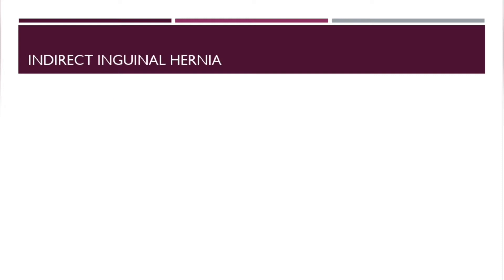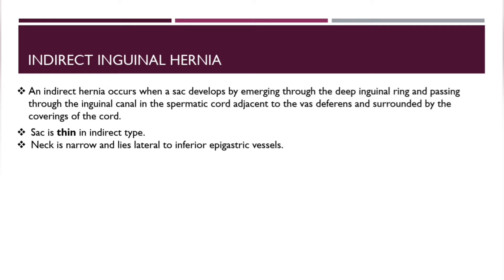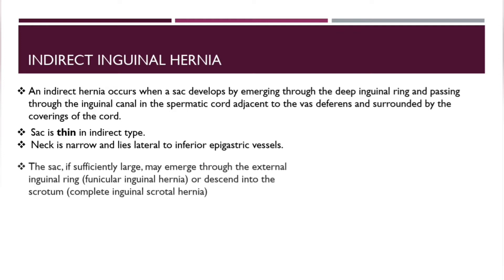Let's talk about indirect inguinal hernias. An indirect hernia occurs when a sac develops by emerging through the deep inguinal ring and passing through the inguinal canal in the spermatic cord, adjacent to the vas deferens and surrounded by the coverings of the spermatic cord. In indirect inguinal hernia, the annual sac is thin and the neck is narrow and lies lateral to the inferior epigastric vessels. If the hernia is sufficiently large, it may emerge through the external inguinal ring — this is called funicular inguinal hernia — or descend into the scrotum, called complete inguinal scrotal hernia.